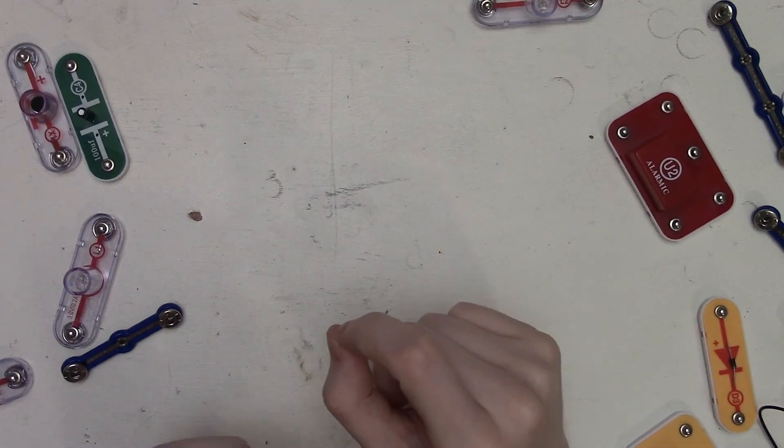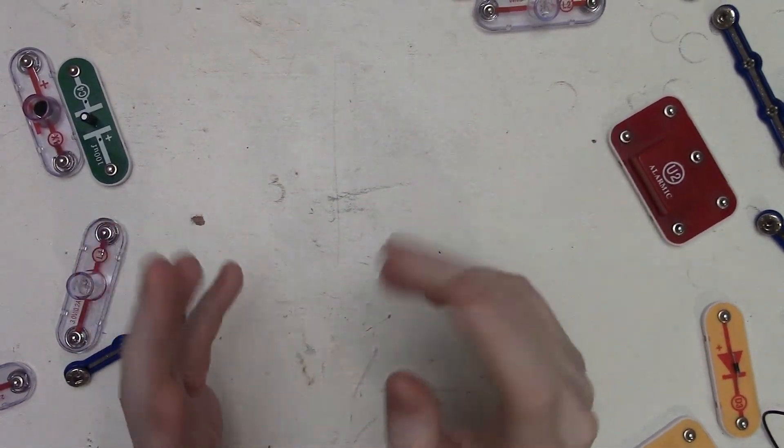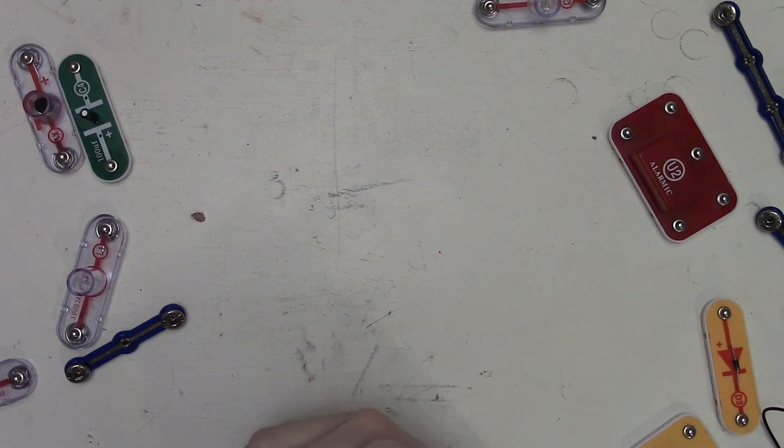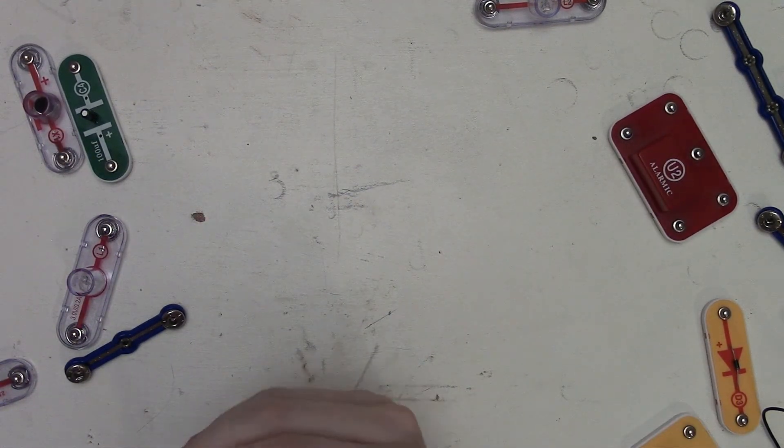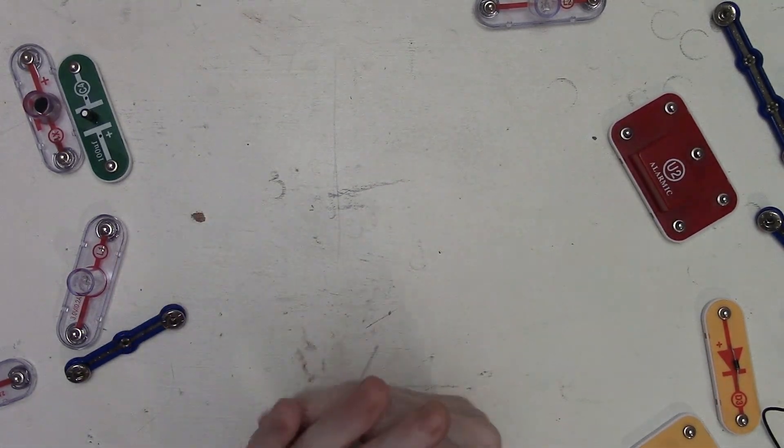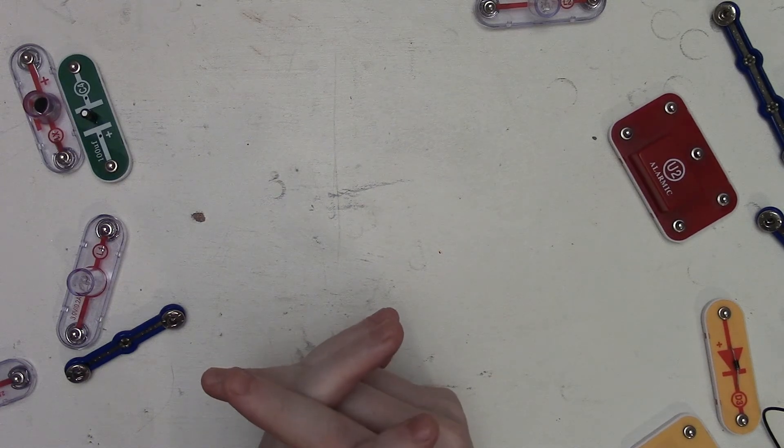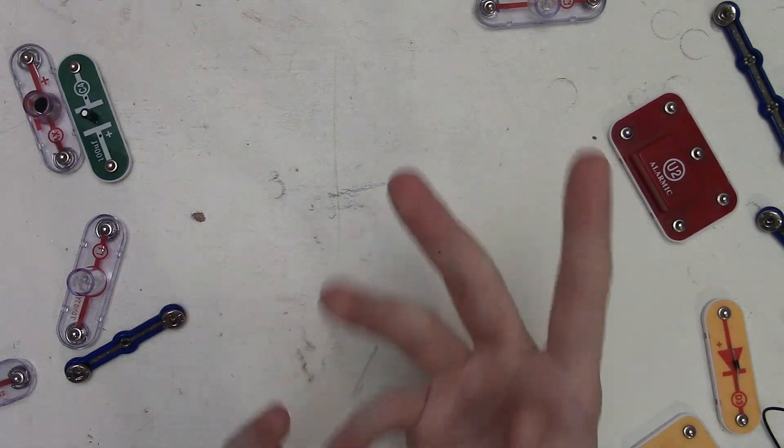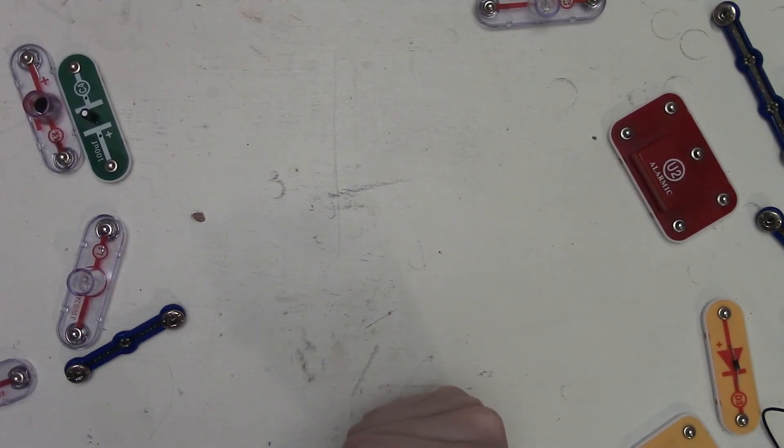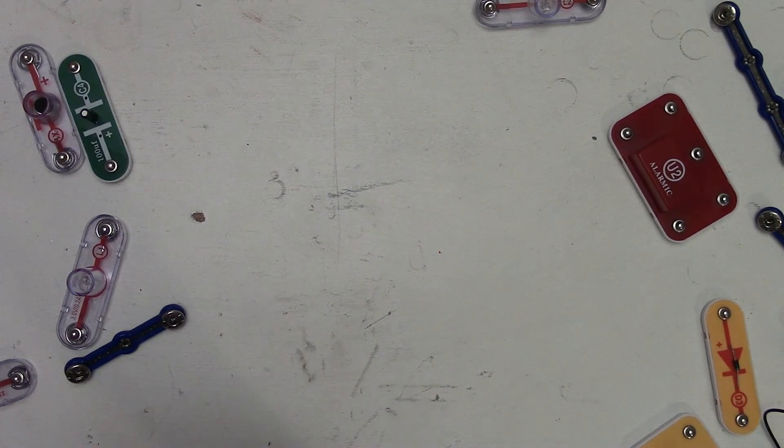A while back I brought up the notion about replacement parts for Snap Circuits sets if you have a part that's defective or if you buy a set and find that a piece is missing. I never really showed the actual newer replacement parts that you can get. I recently ordered three and I got them today, so I figured I would show you the ones that I got that are replacements for the ones that are not working.